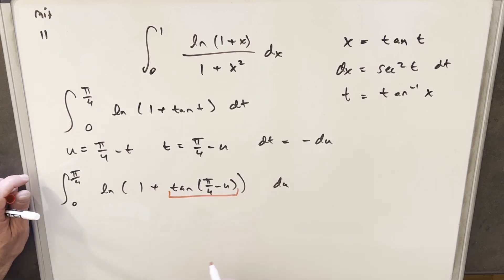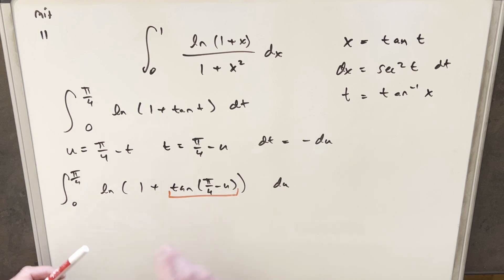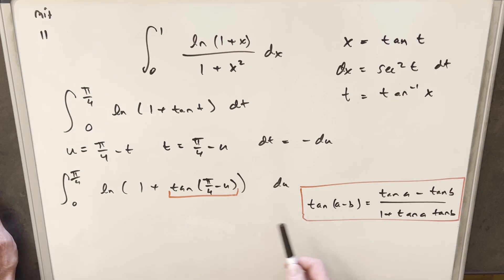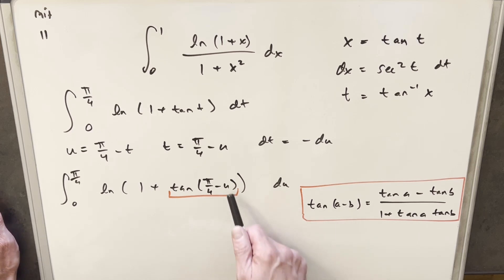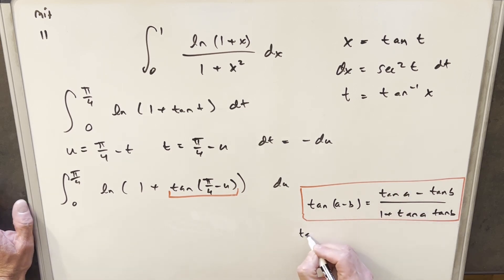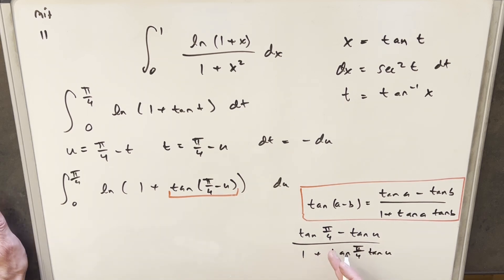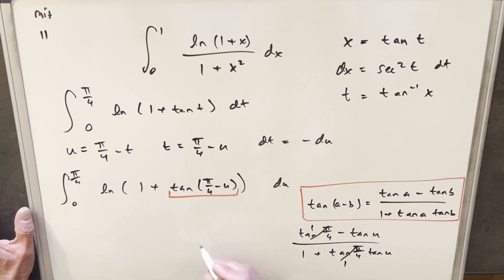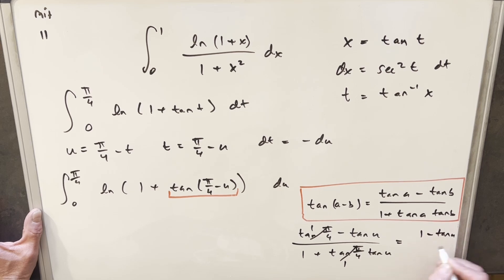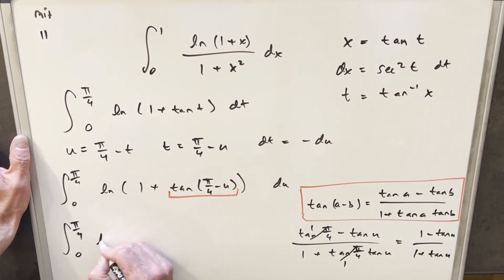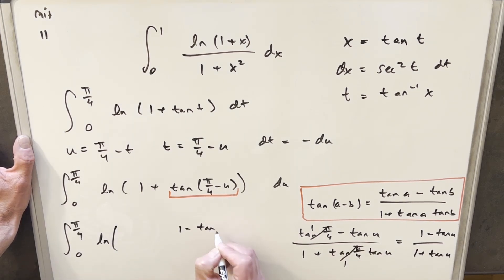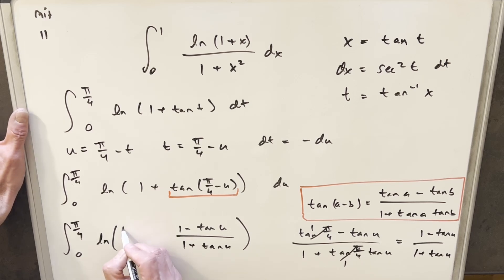Now I want to focus on simplifying tan of (pi over 4 minus u) using the tangent difference angle formula, with a equals pi over 4 and b equals u. That gives tan(pi/4) minus tan(u) all over 1 plus tan(pi/4) times tan(u). Since tan(pi/4) equals 1, this cleans up to (1 minus tan u) over (1 plus tan u). Then adding the 1 written as (1 plus tan u)/(1 plus tan u), the tan terms cancel and we get 2 over (1 plus tan u).